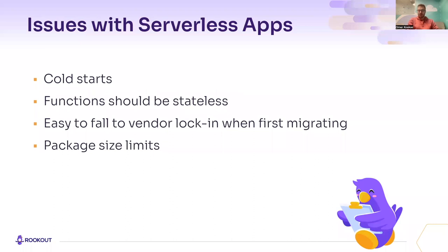So let's go over the issues that users most commonly face with serverless apps. You've got cold starts. You've got a transition in your functions to being stateless. It's very easy to fall into vendor locking when first migrating. And you're also limited by the size of your package. These are the big pain points. We are not going to go over every single one of them, since we don't have time. But if you decide to use a Docker image as your Lambda endpoint, you can increase the size of your app from 200 megabytes to 10 gigabytes simply by using a Docker image instead.